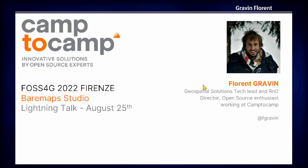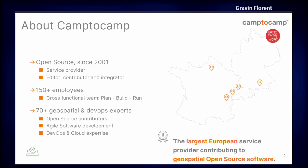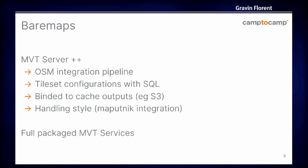I'm Florent Gravin, working at Camp2Camp as a research and development lead. I'm going to talk about BearMap Studio, which is a new way to build and publish your map based on vector tiles. It's based on BearMaps, which is yet another MVT server, but it has the singularity of being a full package MVT server with OSM data integration pipeline and facilities to cache the output in S3 or buckets. Everything is made to ease the publication of your own vector tile stream with your own style.